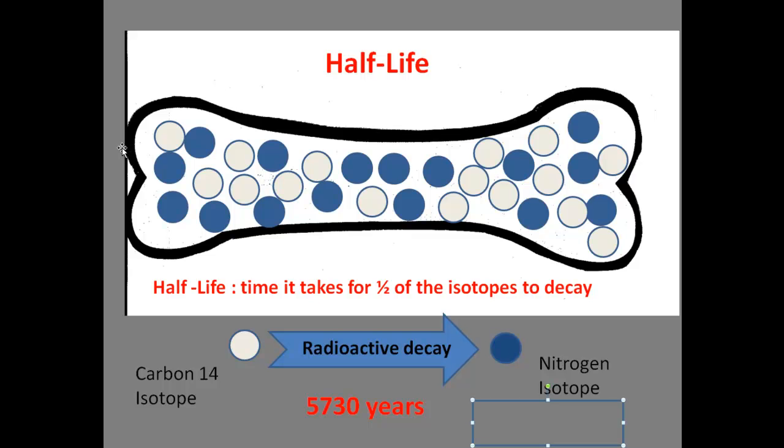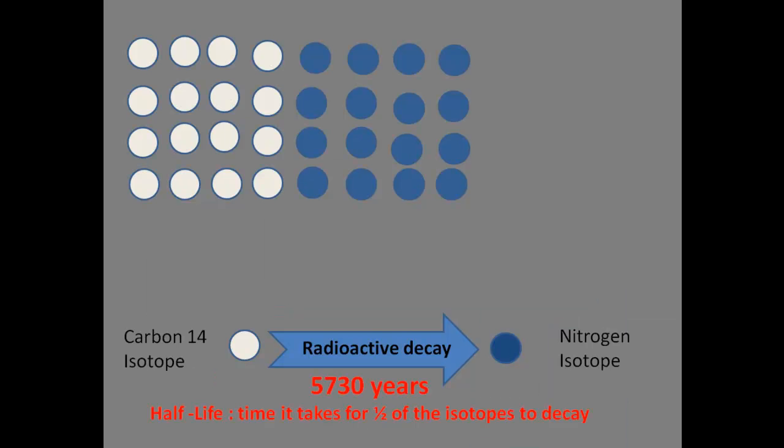So in the books and in whatever worksheets I give you, I'm not going to show you something like this so you don't have to count them. I'll give you something like this where everything's nice and neat. You can clearly see that half of it has changed, half of it has remained. So 50% is carbon-14, 50% is the nitrogen. And so this would represent one half-life and it would be 5,730 years old.